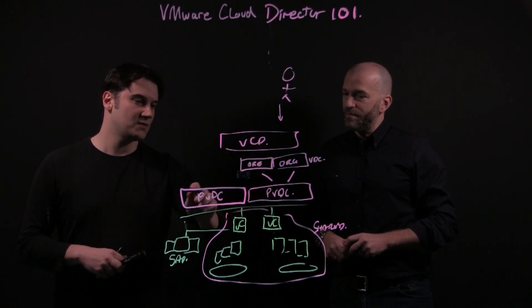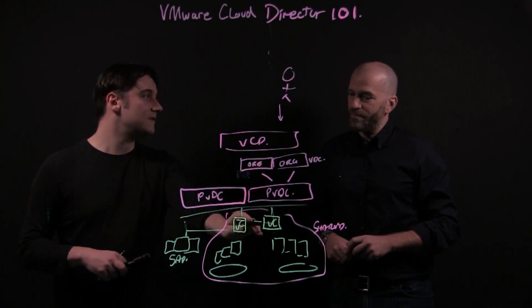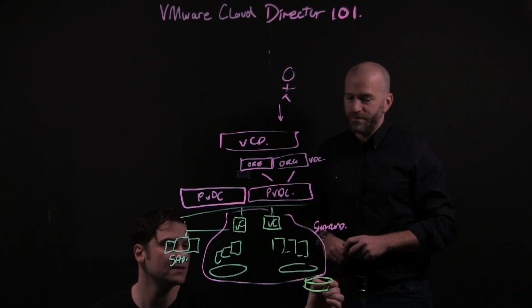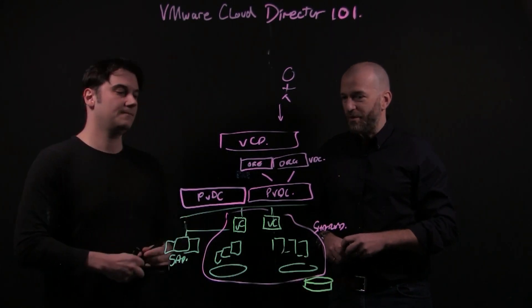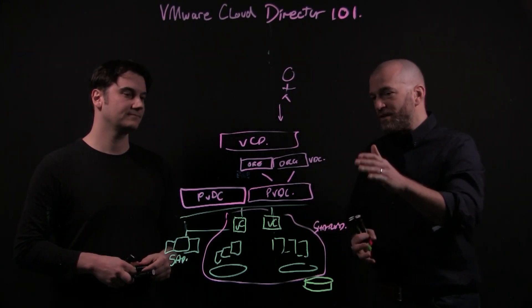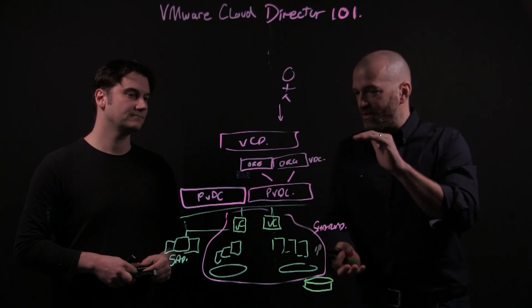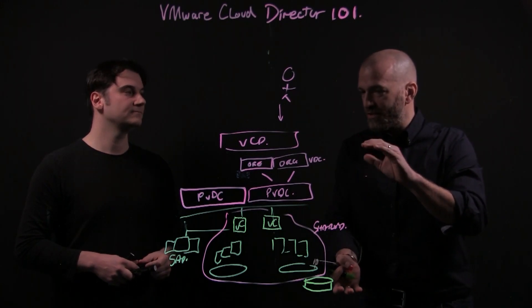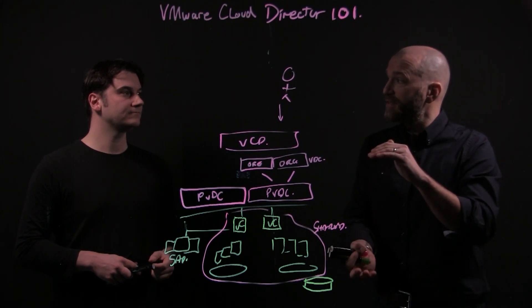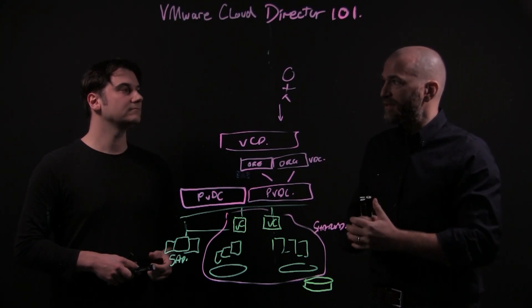So my action of creating that org VDC here told vCloud Director, talk to this provider, which is this vCenter here, go and create me a resource pool for this customer. If you want to do a mapping like that, exactly. So how can this be used by providers to tier their services, to provide different levels of service to their orgs?